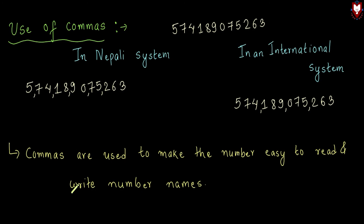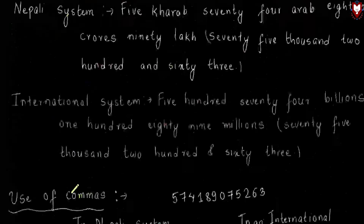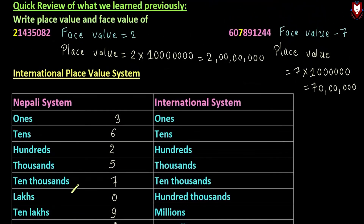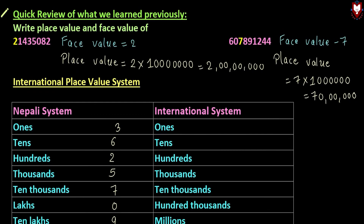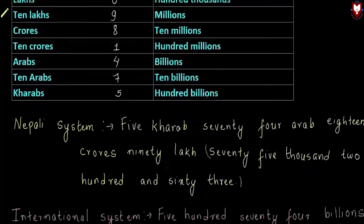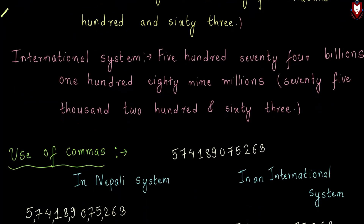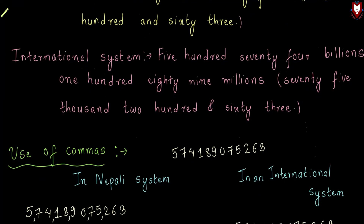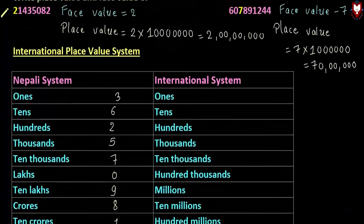For our first number system, the sub-topic is the international place value system. The idea is to compare how many numbers are available and what we need to use in each system. We will continue in the next video.